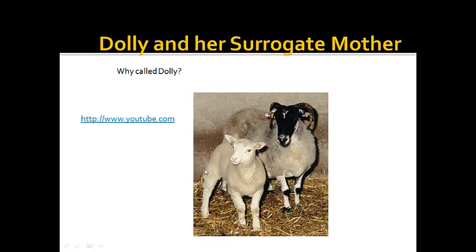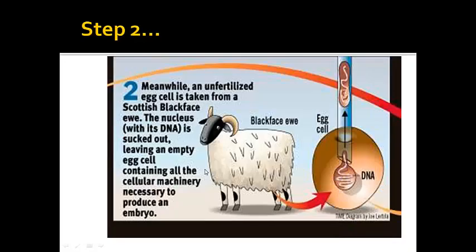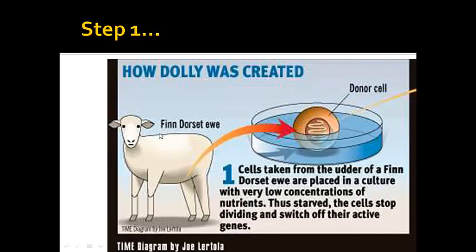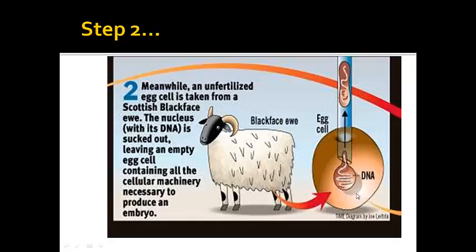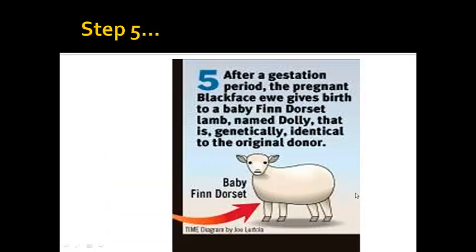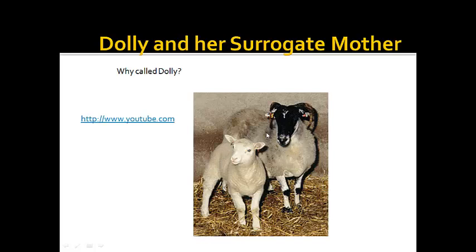Now, why was Dolly named Dolly? Because the original cell was taken from the udder — or the mammary gland — of the first sheep. So who has the biggest boobs that we know of? That would be Dolly Parton. And so Dolly the sheep was named after Dolly Parton.